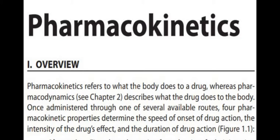Pharmacokinetics refers to what the body does to the drug — it describes the body's effect on the drug. Pharmacodynamics, which I will cover in Chapter 2, describes what the drug does to the body — the drug's effect on the body — which may be desirable or undesirable, such as a therapeutic effect, an adverse effect, or a side effect. Once administered through one of several available routes, four pharmacokinetic properties determine the speed of onset of drug action, the steady state, and the duration of drug action.